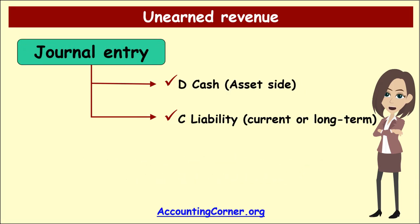The following unearned revenue journal entry is recorded. Debit: Cash — it is money received from the customer, recorded on the asset side. Credit: Unearned Revenue — it is an obligation to provide services or sell goods, recorded on the liability side.